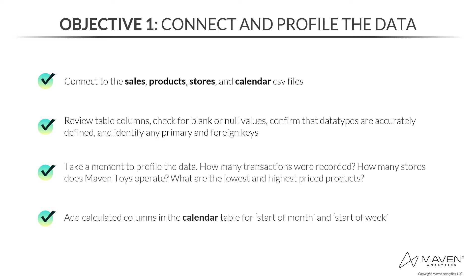The third task is to explore and profile the data to get an idea of what's included. After this you should be able to answer questions like how many transactions were recorded, how many stores does Maven Toys operate, and what are the lowest and highest priced products. The fourth and final task is to add a new calculated column to the calendar table for start of month and start of week.